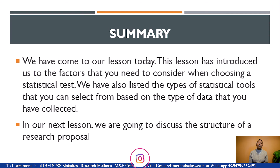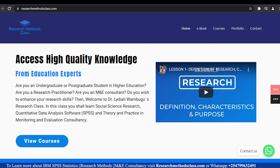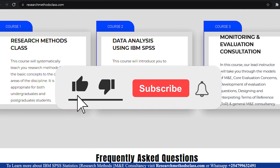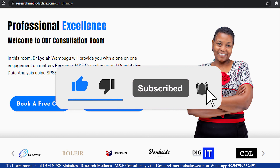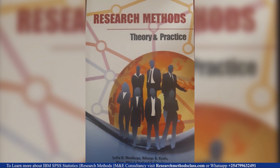That brings us to the end of our lesson, where we discussed the factors to consider when choosing a statistical test and listed the types of statistical tools you can select based on the type of data or scale of measurement. In our next lesson, we will start discussing the research proposal. Before then, make sure you visit researchmethodsclass.com, where you can watch the full research methods course, access SPSS and M&E consultancy courses, book for consultation, and buy the research methods e-book. See you in the next lesson as we discuss the research proposal.